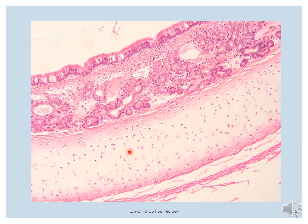The next layer is the cartilage ring layer. So from lumen outward we have the pseudostratified columnar epithelium on the basement membrane, then the lamina propria, then the submucosa, and then the cartilage layer.